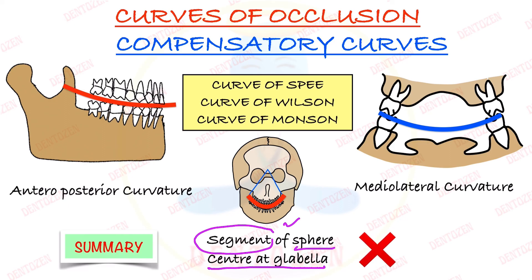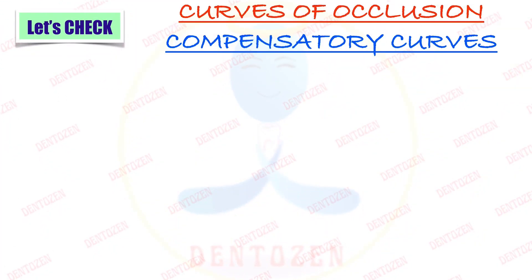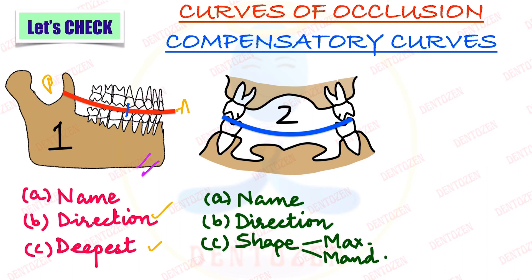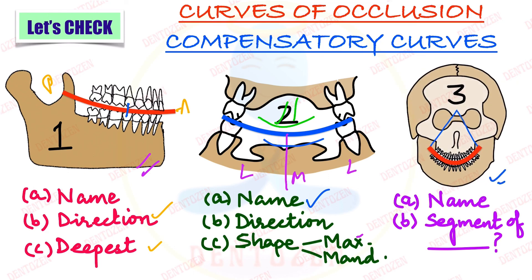Now let's check what you have learned. First diagram: what curve is shown, what is the direction of this curve, and where is this curve deepest? Second diagram: which curve is shown, what is the name, what is the direction, and what is the shape of this curve in the maxilla and in the mandible? Third diagram: which curve is shown, and this curve is a segment of which shape — what shape is the occlusal plane when seen in three dimensions? That is all for this video.